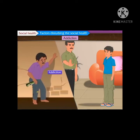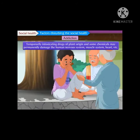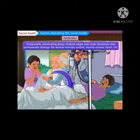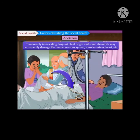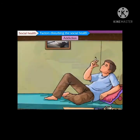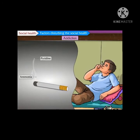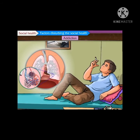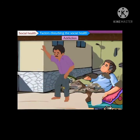Due to such frequent consumption, they get used to these substances, leading to addiction. Temporarily intoxicating drugs and some chemicals may permanently damage the human nervous system, muscle system, and heart. Long-term consumption of tobacco products may lead to mouth and lung cancer. Smoke from tobacco products contains harmful substances like pyridine, ammonia, carbon monoxide, nicotine, and sulphur dioxide. Due to inhalation of these compounds, healthy tissues of the lungs are affected, tumours are formed, and this can eventually lead to cancer.